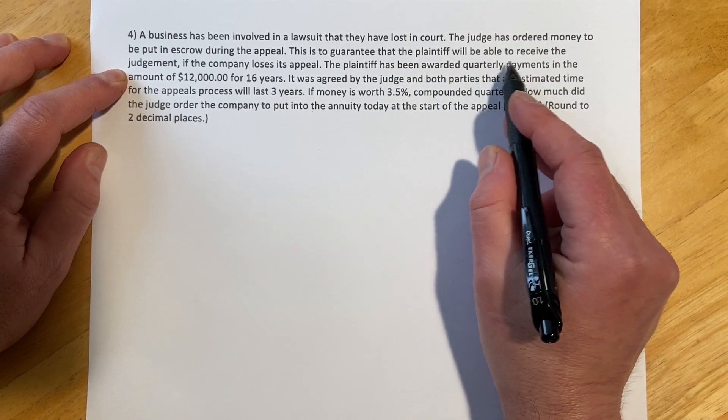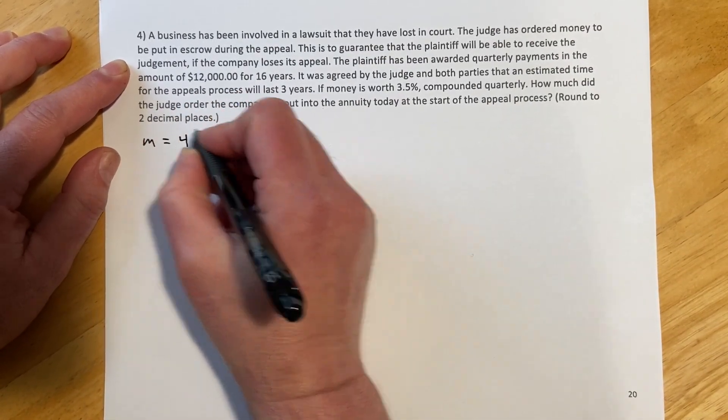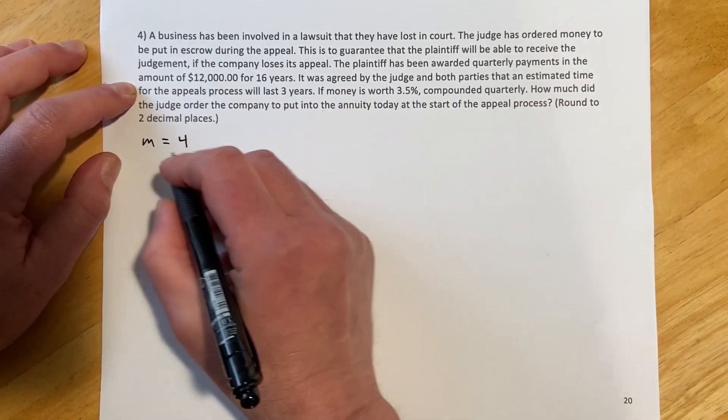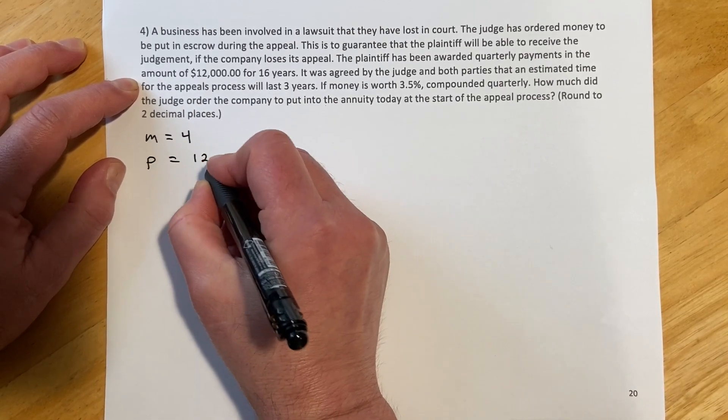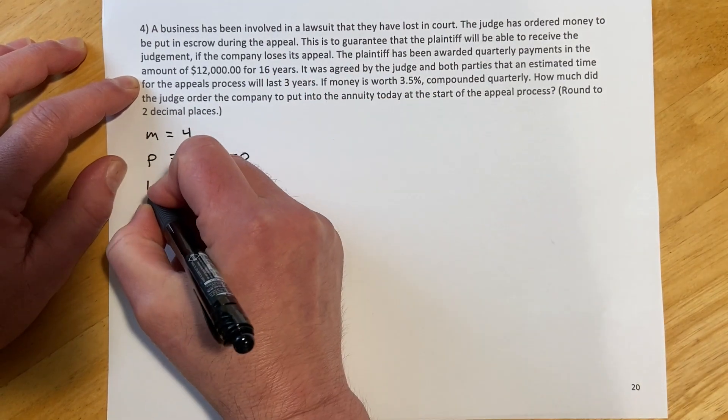So the plaintiff has been awarded quarterly payments, so we got quarterly, so our M is going to be four, of $12,000 for 16 years. So the payments are 12 grand and our time is going to be for 16 years.